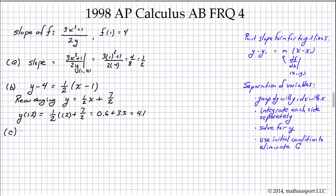So part C is the heart of this problem. We have to use separation of variables to find f as a function of x. So let's begin. We have dy/dx equals 3x squared plus 1 over 2y. Therefore we can separate this into the following: we can write 2y dy equals 3x squared plus 1 dx.